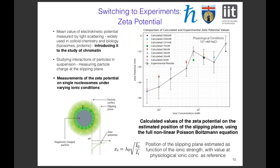We measured the zeta potential on nucleosomes — the mean electrokinetic potential measured by light scattering techniques, widely used in colloid chemistry. To our knowledge, we are introducing this to the study of chromatin. We measured zeta potential on single nucleosomes under varying ionic conditions and found, as expected, that the zeta potential becomes less negative as ionic concentration increases. We were also able to reproduce these results computationally by calculating the zeta potential at the estimated position of the slipping plane using the full non-linear Poisson-Boltzmann equation, observing a similar trend.